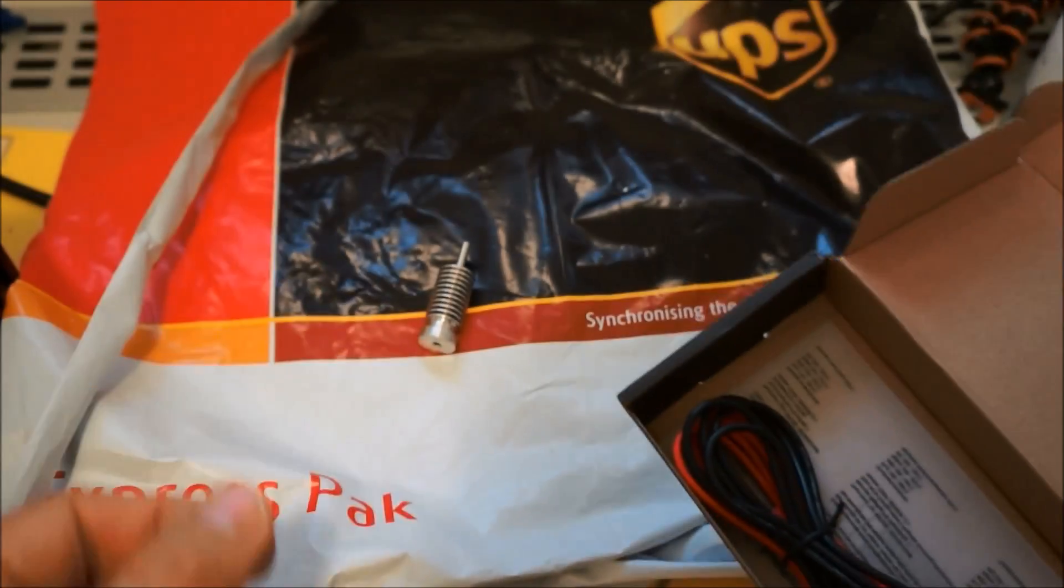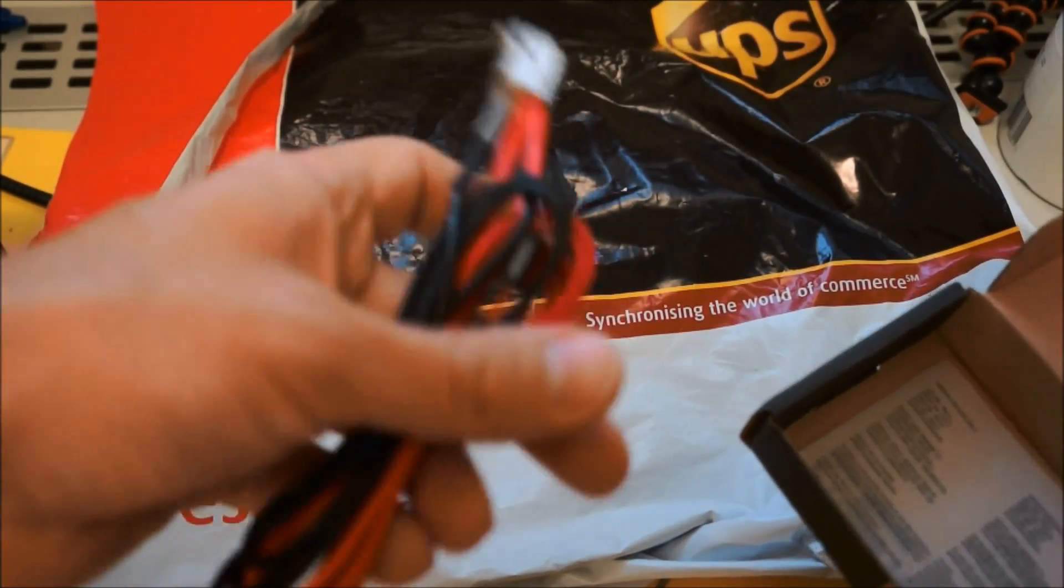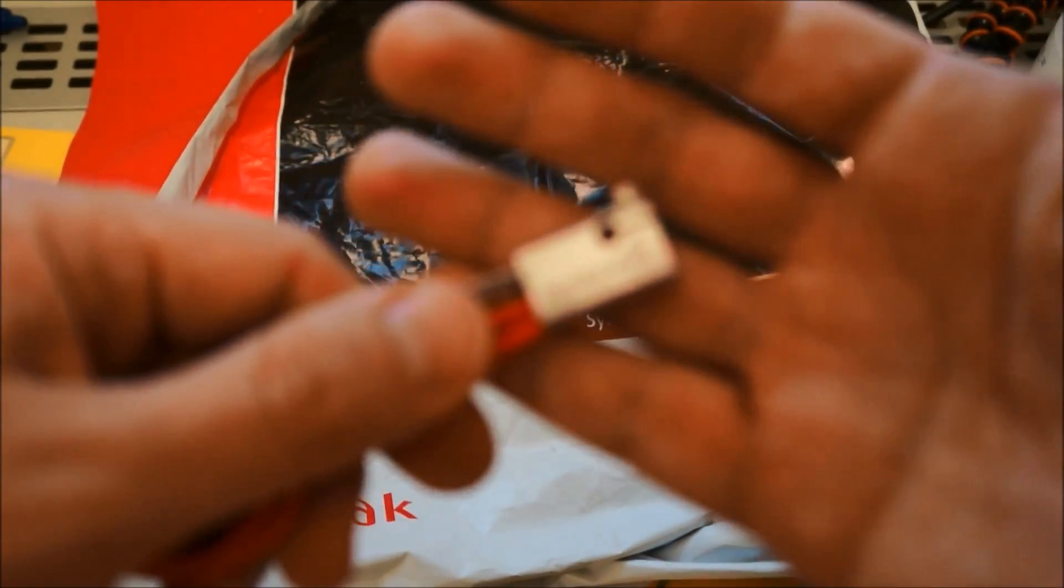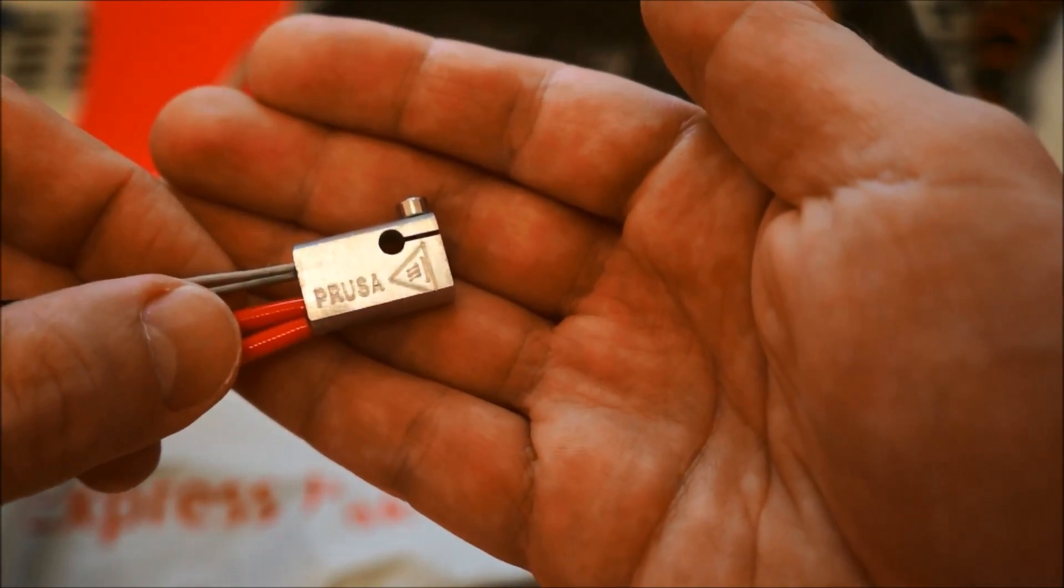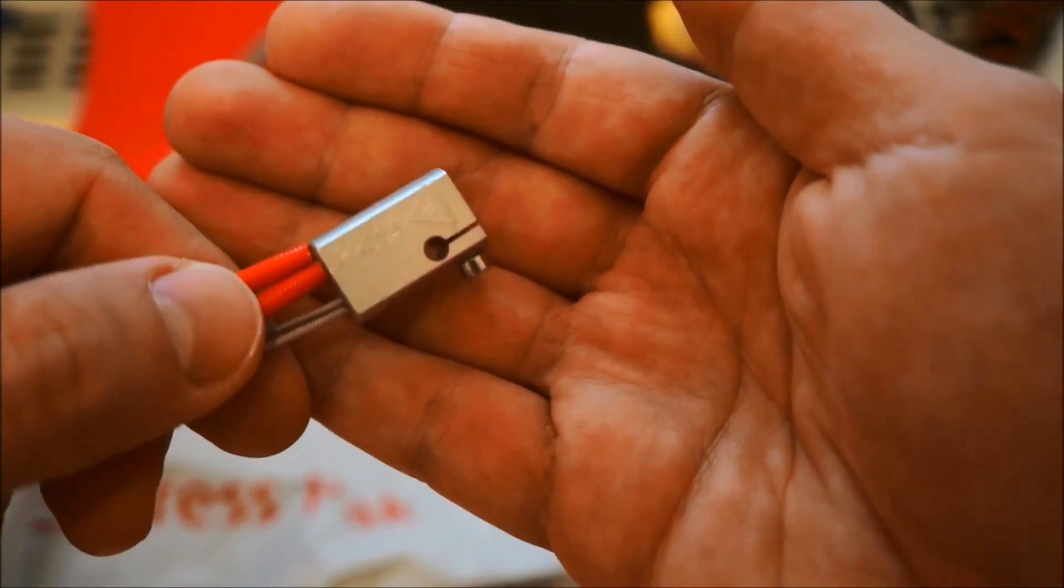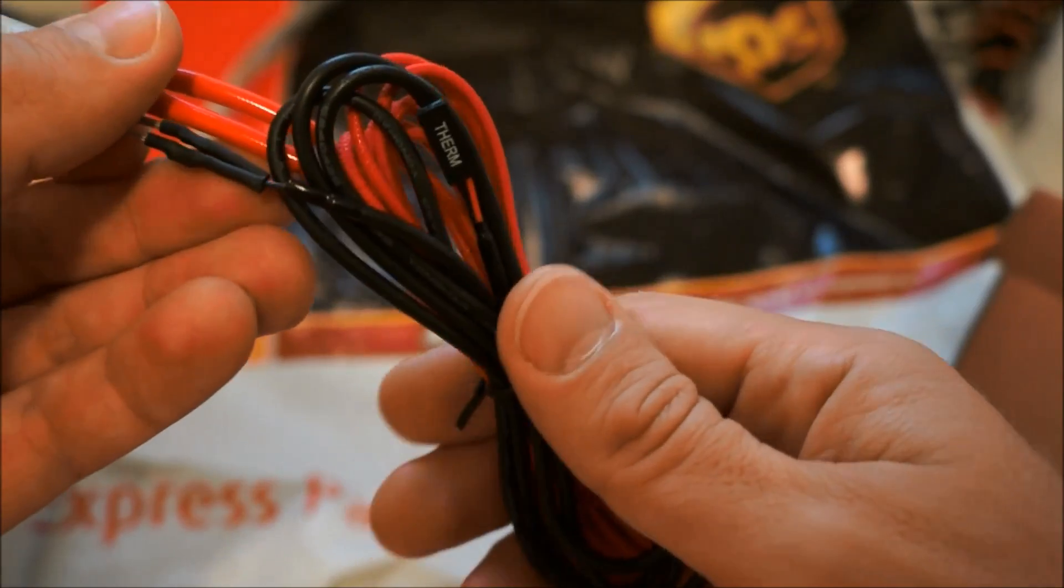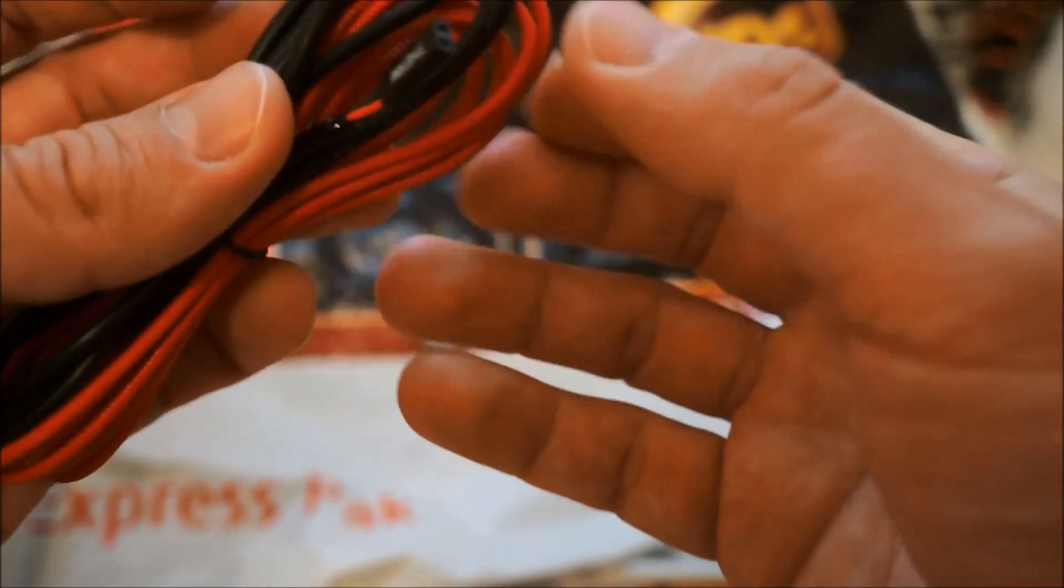What else do we have in the kit? We have the already made cable with the heater, heater block, and thermistor. You just mount this on and squeeze the nut here. On the other side of the cables we have the thermistor and we have the cable for the power for the heater.